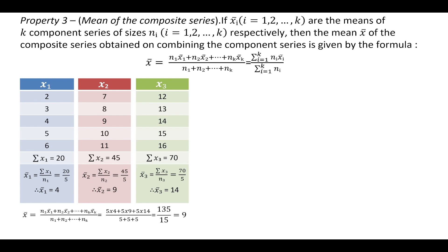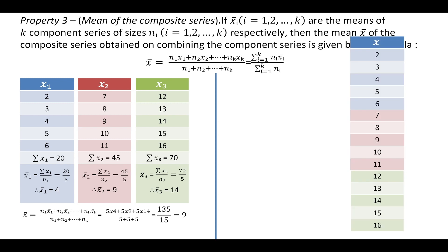Now let us see if we get the same value of arithmetic mean of the combined series by using the regular method. Here we have combined the composite series and we get Σx = 135, giving us the arithmetic mean as 9.